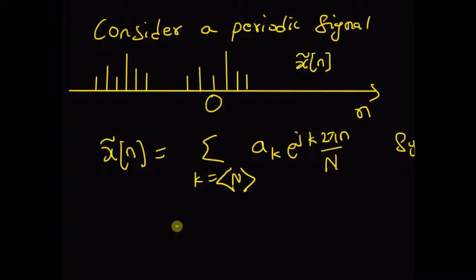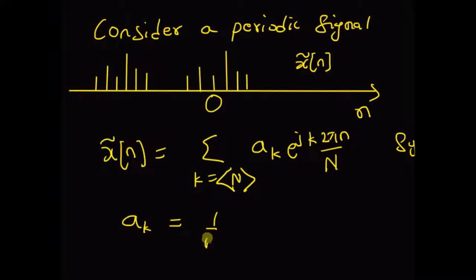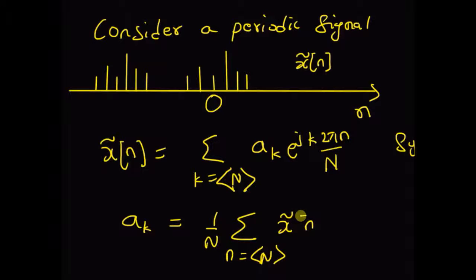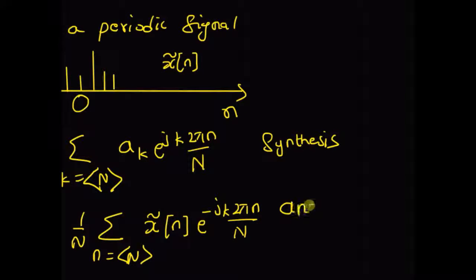Now the analysis equation, that is, the values of the coefficients a_k, is given by: a_k = (1/N) summation over n of x̃[n] multiplied by e^(−jk·2π·n/N). This is the analysis equation.